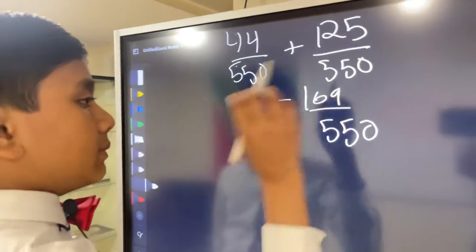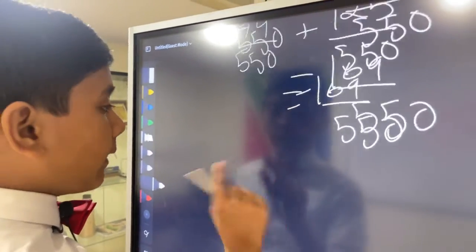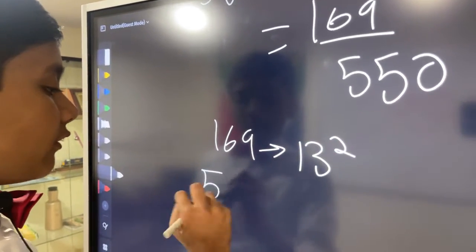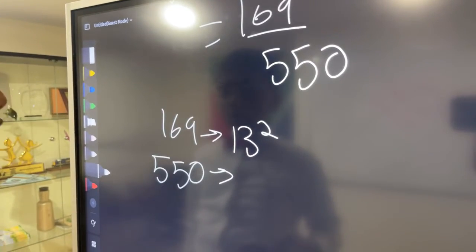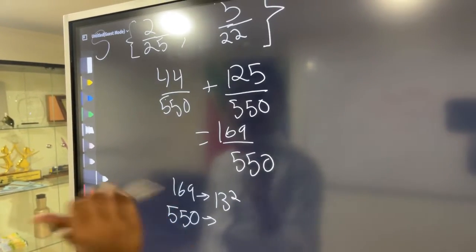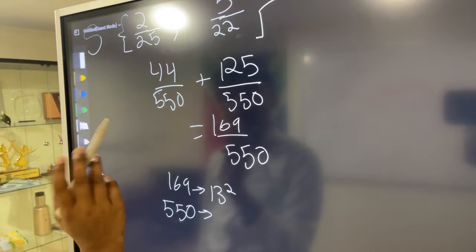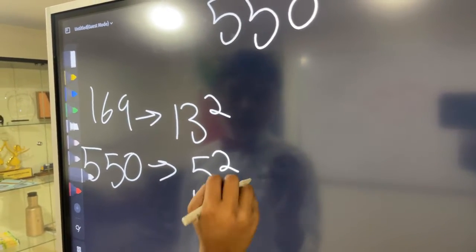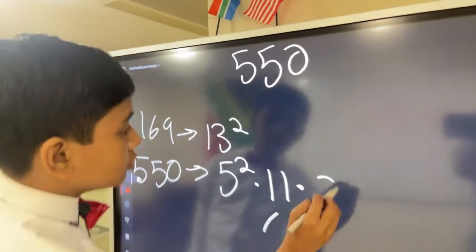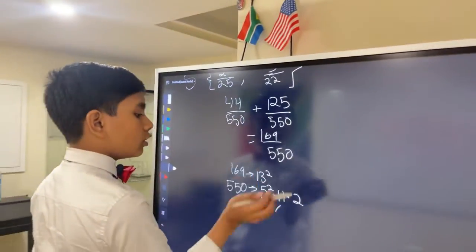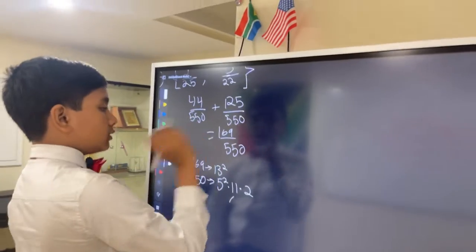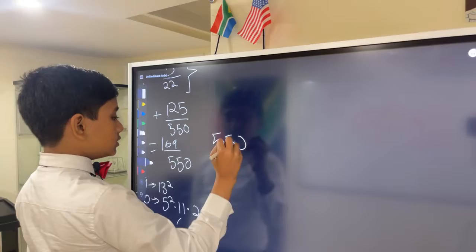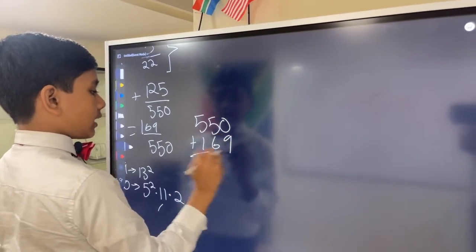Now let's prime factorize it to make sure these two are relatively prime. 169 is 13 squared. 550 is equal to, well, it's 25 times 22. So it's 5 squared times 11 times 2. So yeah, there are no prime factors in common. So these are relatively prime. So that means the final answer is just the sum of these two, which is 719. That's how I solved it.